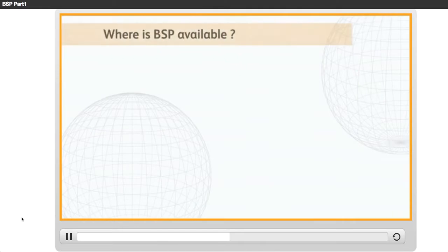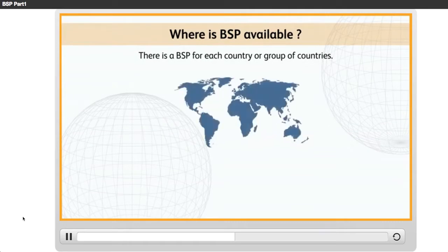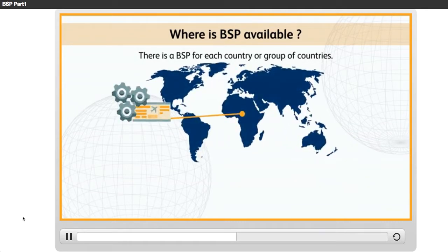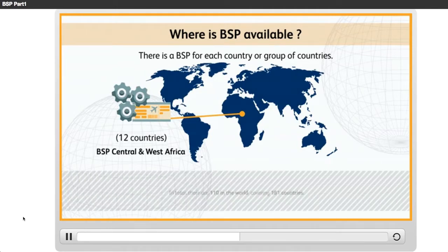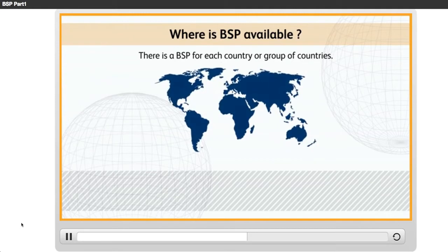Where is BSP available? There is a BSP for each country or group of countries. For example, BSP Central and West Africa covers 12 countries. In total, there are 110 BSPs in the world, covering 181 countries. However, there is no BSP in certain countries.